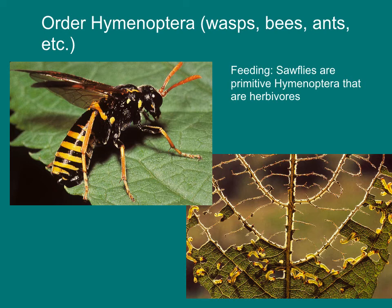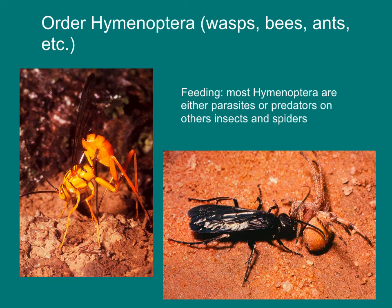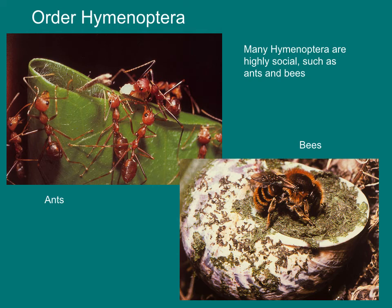The order Hymenoptera includes the sawflies, hunting wasps, ants, and bees. Sawflies are primitive wasps whose larvae feed on plants as herbivores. Many wasps are parasitic, injecting their eggs into the bodies of their prey, or predatory, capturing their prey and carrying it back to a nest. Hymenoptera also includes the highly social ants and over 20,000 species of bees. Think of bees as vegetarian wasps — they have switched from a diet of insect prey to a diet of pollen and nectar.